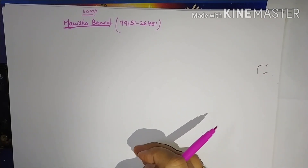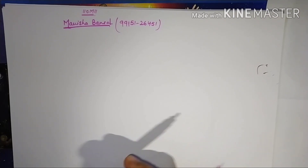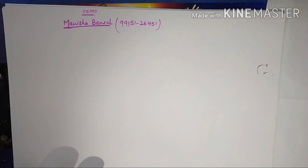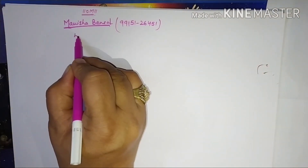Let us start with the sum. We are having two types of sums: which must be subtracted and which must be added. I wanted to solve both types with the same number so that you can see the exact difference. As I mentioned in my previous videos, I want my children to be confident, so I am taking the worksheet sum directly from the book.